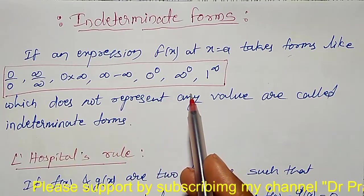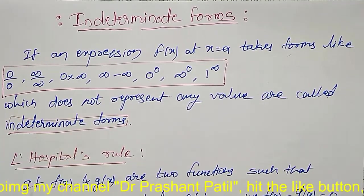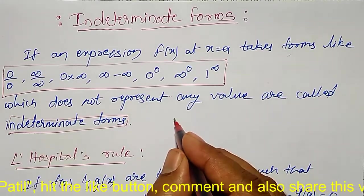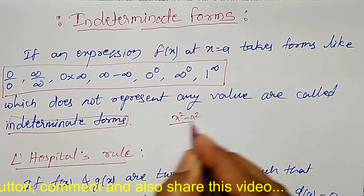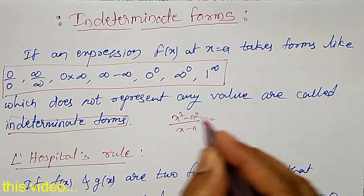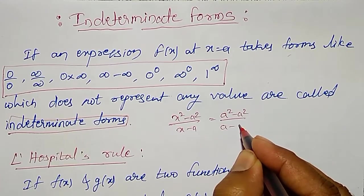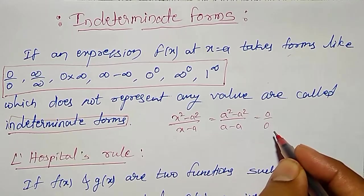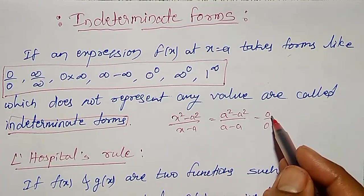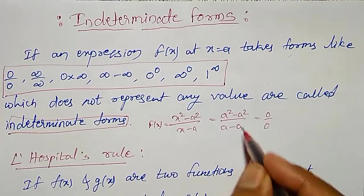Such forms are known as indeterminate forms. For example, take f(x) = (x² − a²) / (x − a). If I substitute x equal to a, it becomes (a² − a²) / (a − a), which gives 0 divided by 0. It has no meaning, so this is in the form of 0/0 at x equal to a. Such forms are known as indeterminate forms.